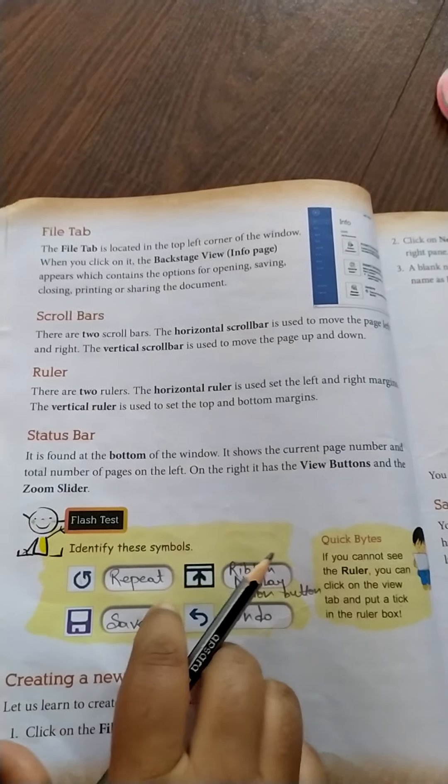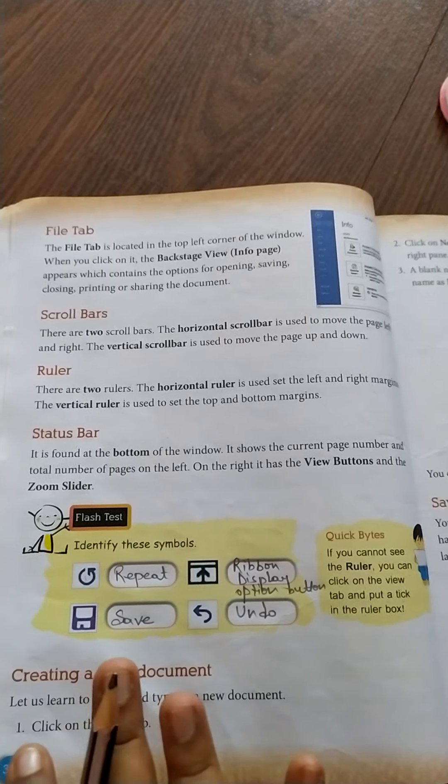What are the things we have done today? We have explained all the components of the Word 2013 window. Today's homework will be to read page number 34, 35, and 36 till the flash test. And after finishing it, please go through the previous part of the chapter that we have done in the last class.